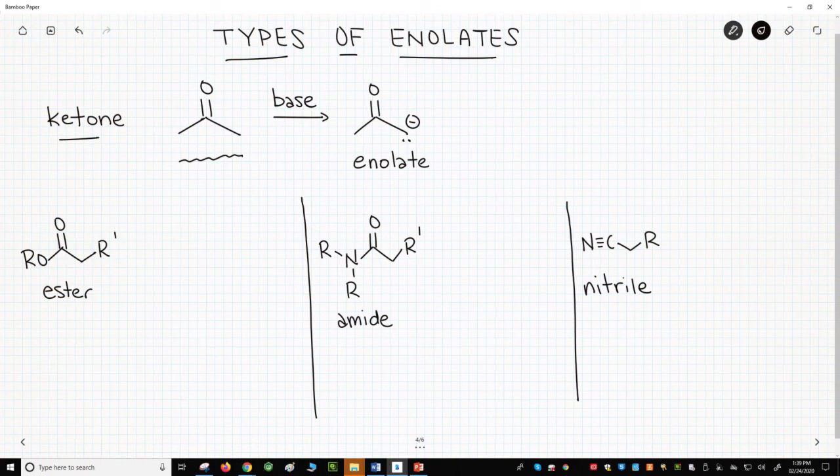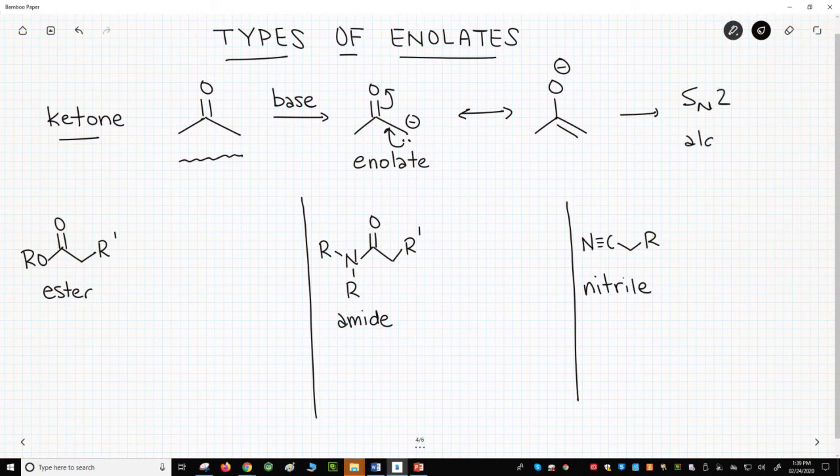The carbonyl stabilizes the negative charge of the enolate through resonance delocalization. Great! Once we have this enolate, we can do all kinds of things. We can do SN2 alkylations. We can do aldol reactions and aldol condensations. Enolates are awesome.